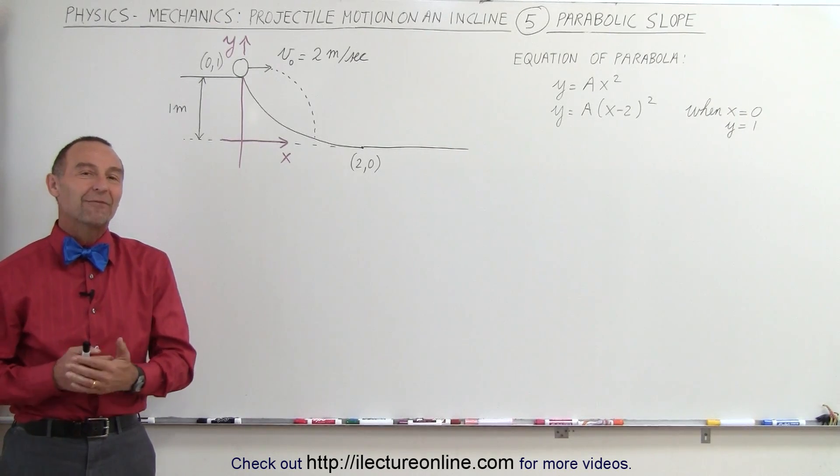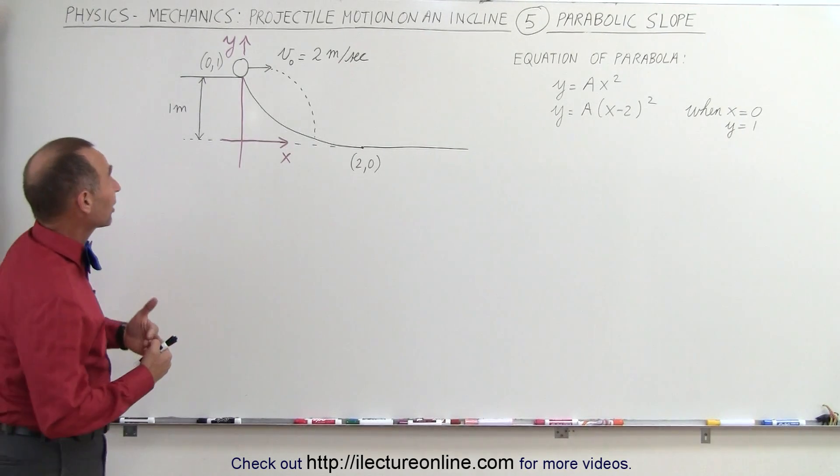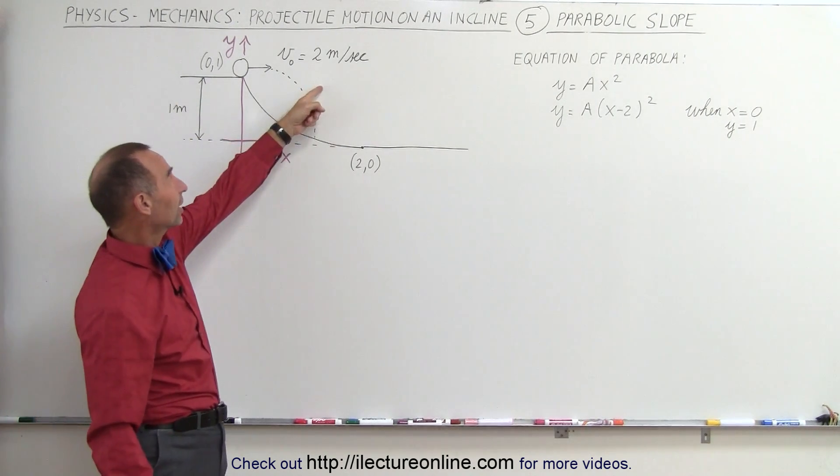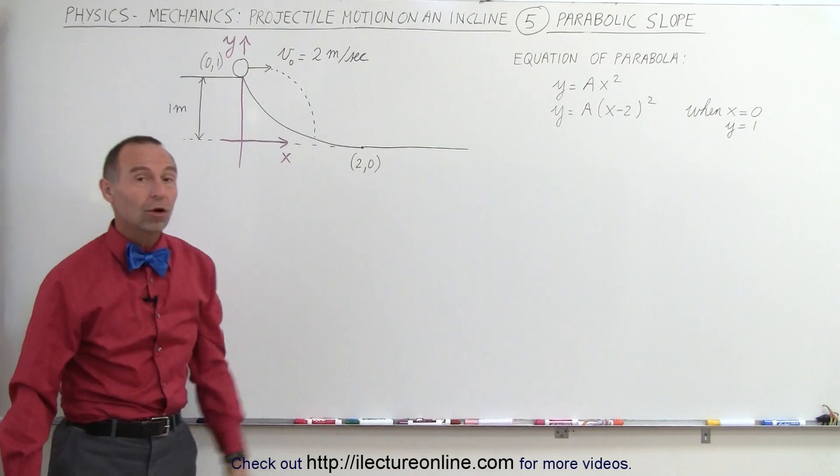Welcome to ElectronLine. Here we have a problem where we're shooting a projectile with a horizontal initial velocity of 2 meters per second over a parabolic slope.